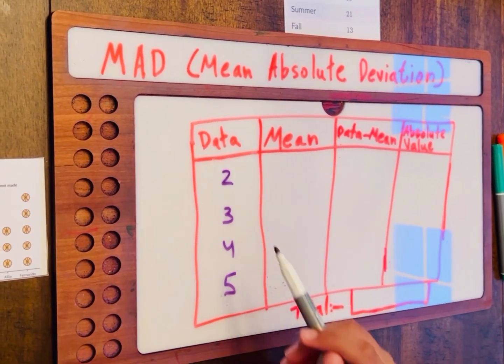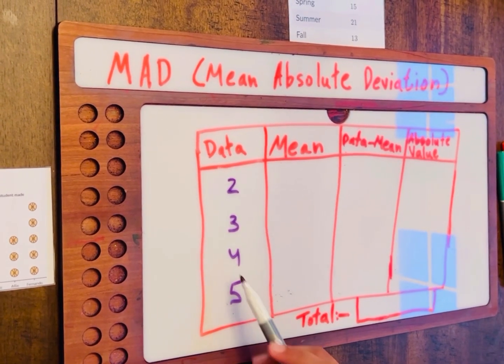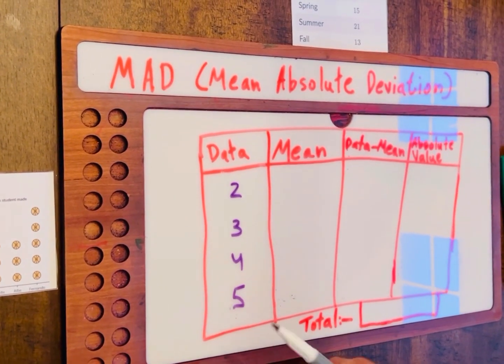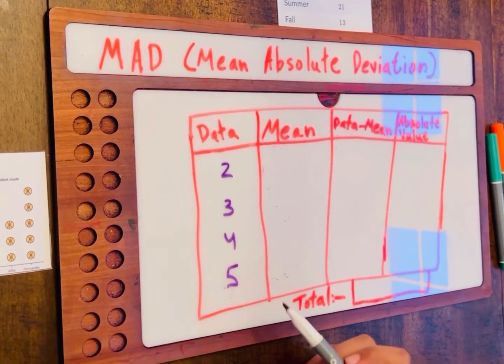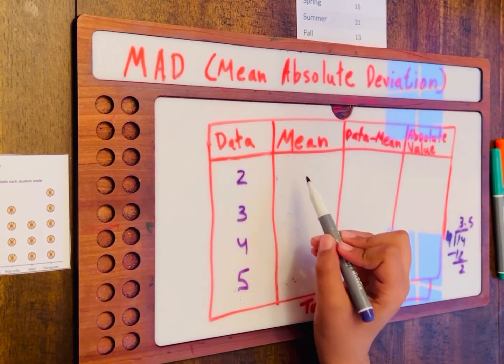Next, we'll find the mean of it. 2 plus 3 is equal to 5. 5 plus 5 is equal to 10. And 10 plus 4 is equal to 14. If we have 14, we have to divide it by 4, which is the amount of numbers that we have. So, the mean we got is 3.5.